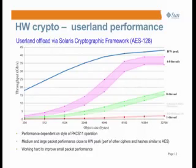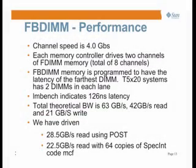We moved from DDR2 to FBDIMM primarily for throughput. The channels run at 4 gigabits per second, and there are four memory controllers each with two channels. With FBDIMM you must program to the latency of the furthest FBDIMM — one, two, or four deep. We're seeing about 126 nanoseconds latency, up about 25% over Niagara 1's 95 nanoseconds. But bandwidth has gone up dramatically from 21 gigabytes per second to 63 gigabytes per second.